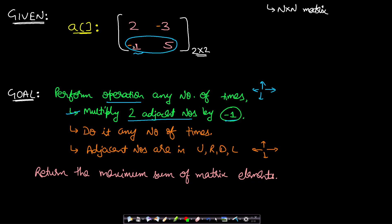Each number can have four adjacency possibilities. We can do the operation any number of times in four directions, and we need to return the maximum sum of the matrix elements after performing the operation any number of times.